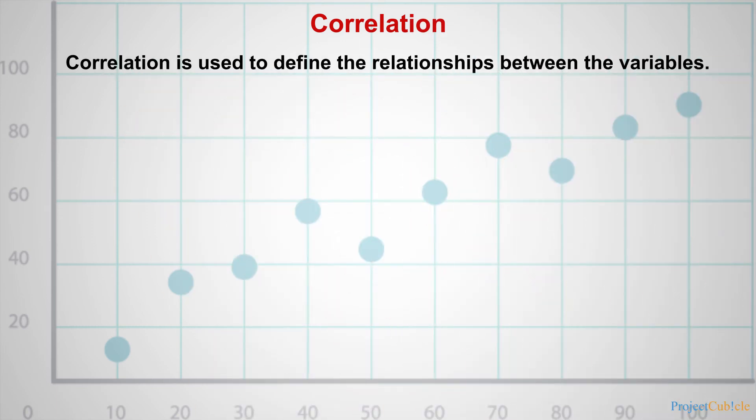Correlation is used to define the relationships between the variables. In other words, correlation shows how the variables relate to each other.